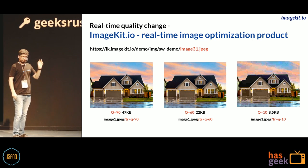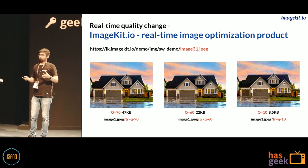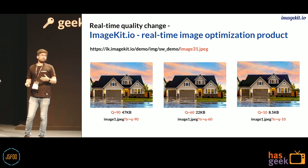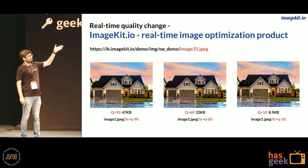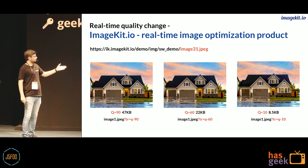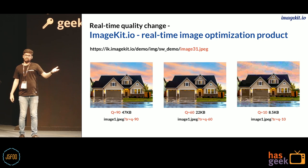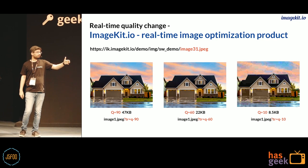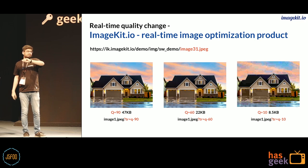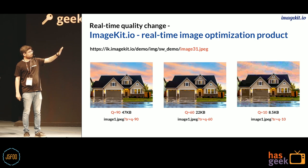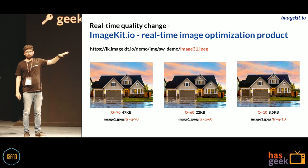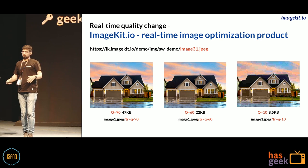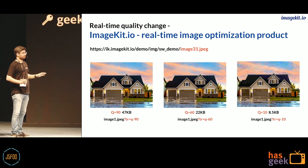How do you change quality? This is where ImageKit comes in. We provide real-time transformations on images. For example, if I have an image URL image31.jpg and want quality 90, I append the query parameter tr=q-90. Changing that to 60 gives a quality 60 image; changing to 10 gives a quality 10 image — visibly low quality with pixelated clouds in the sky. Apart from quality, ImageKit does many other transformations, but for now I'll stick to quality as what we're trying to optimize.